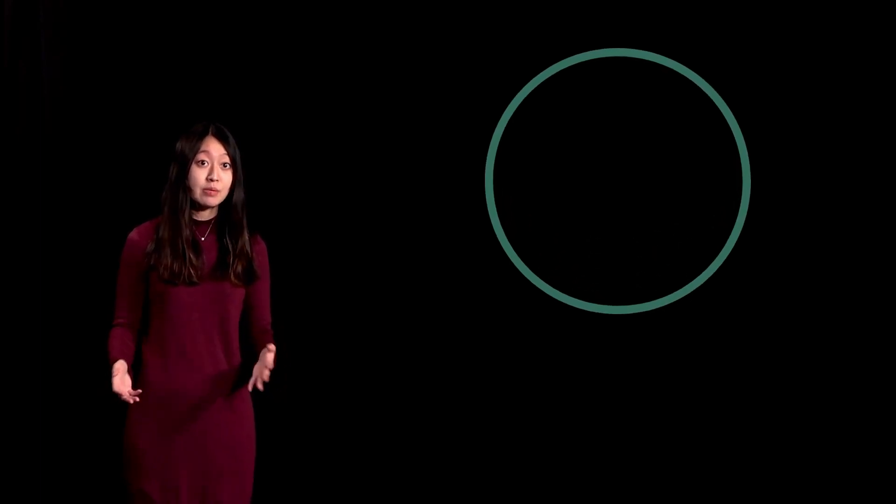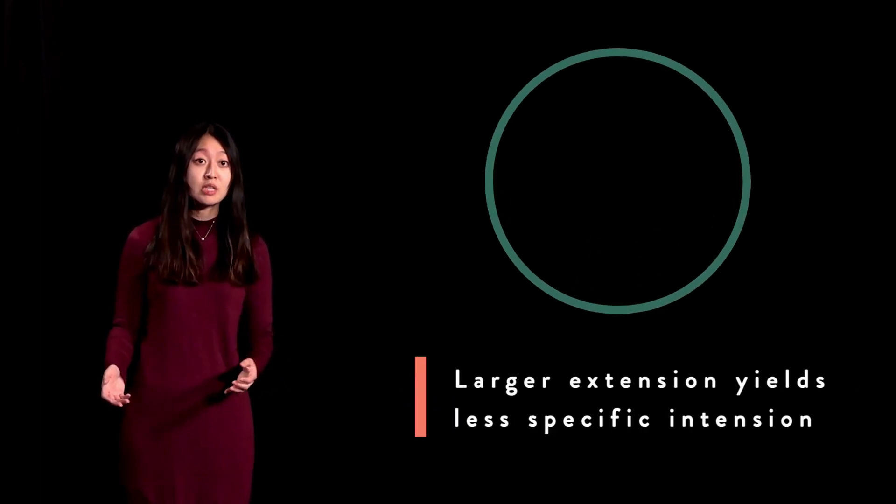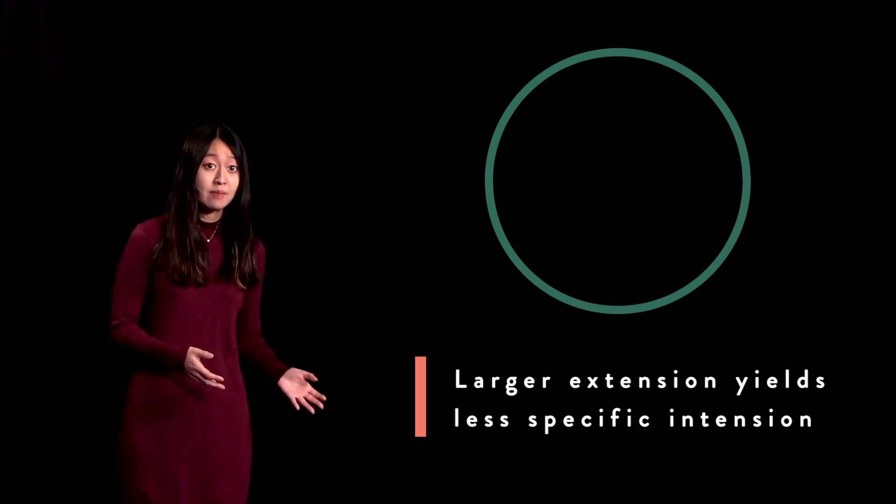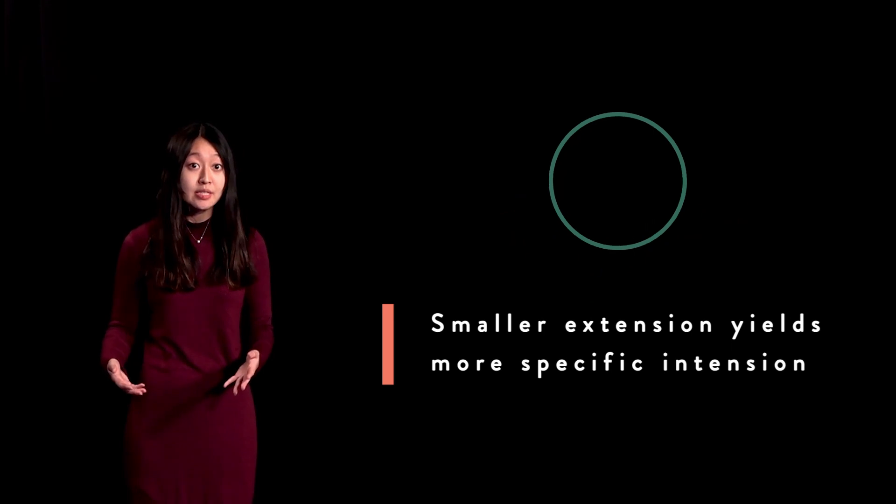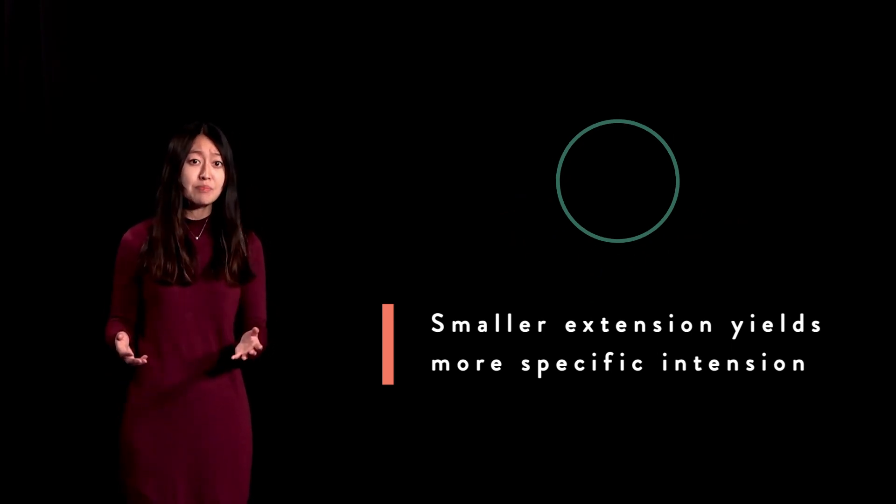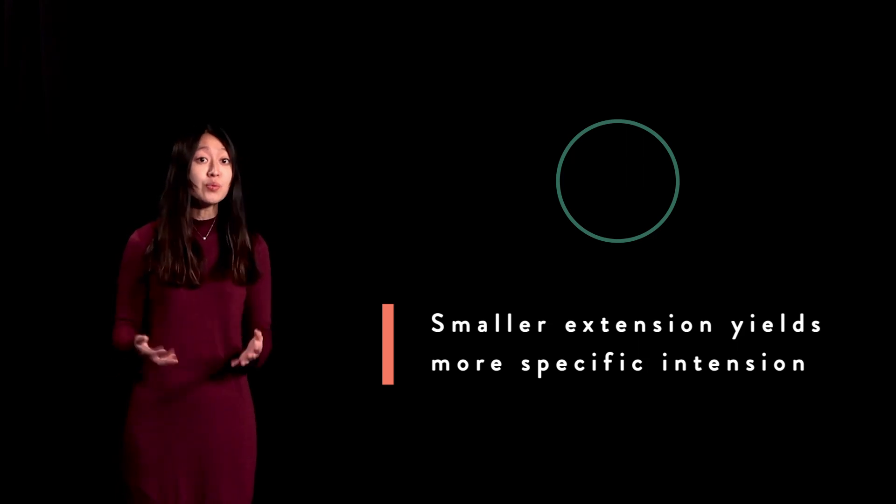It is important to know that these two concepts are, in a way, inversely related. As the extension of a term increases, the term's definition must cover a wider range of things. Its intension becomes less specific. Similarly, as the extension of a term decreases, the term's definition covers a narrow range of things. Its intension becomes more specific. As general rule, the greater number of things to which a term refers, the less specific in meaning it must be.